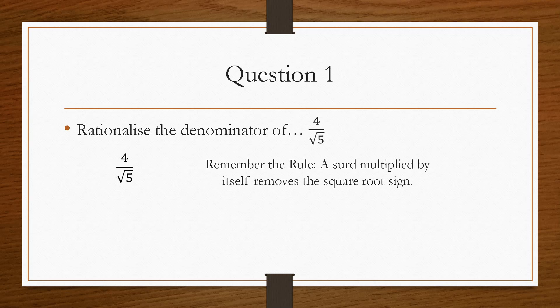now whatever you do to the top, you must do to the bottom of the fraction at the same time. So if we multiply the top and the bottom by the square root of 5, then this is what should happen.